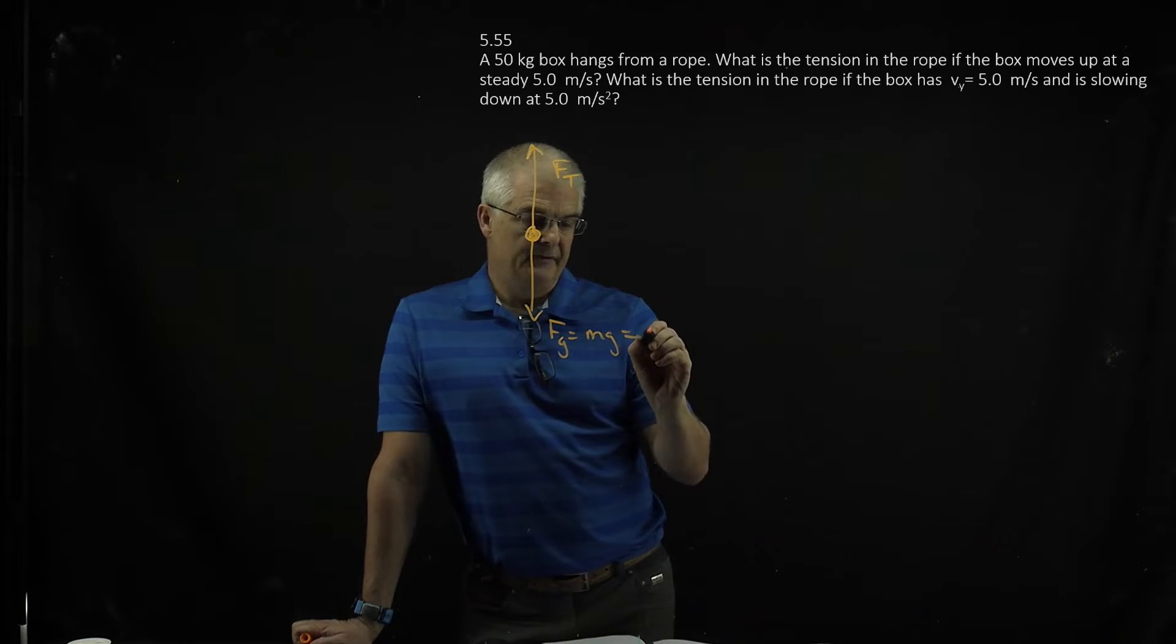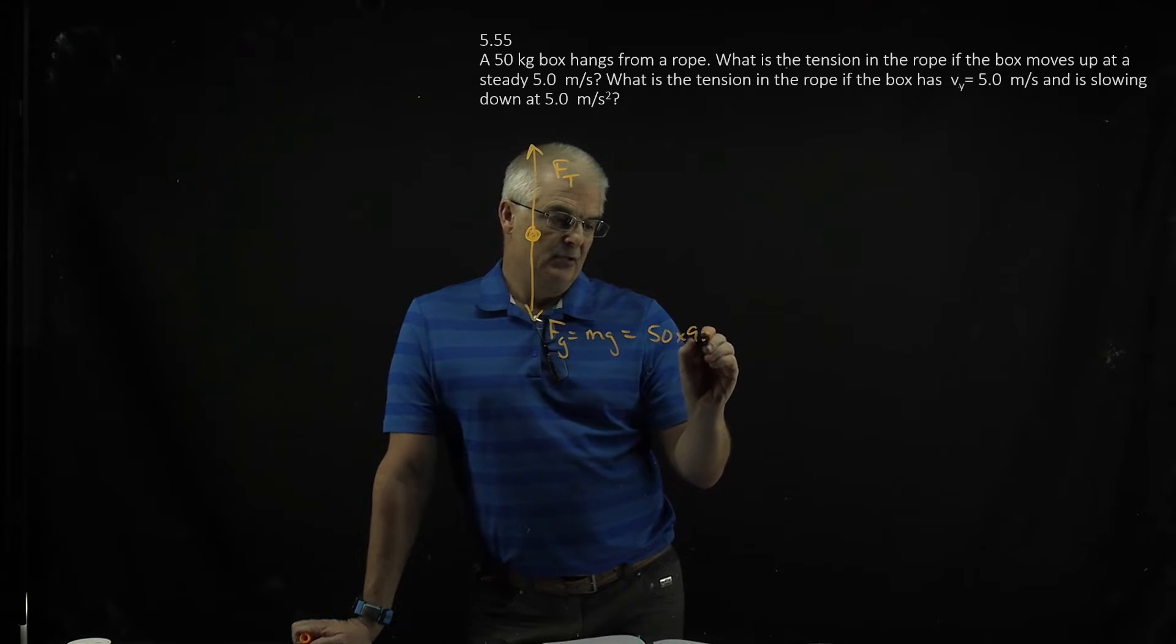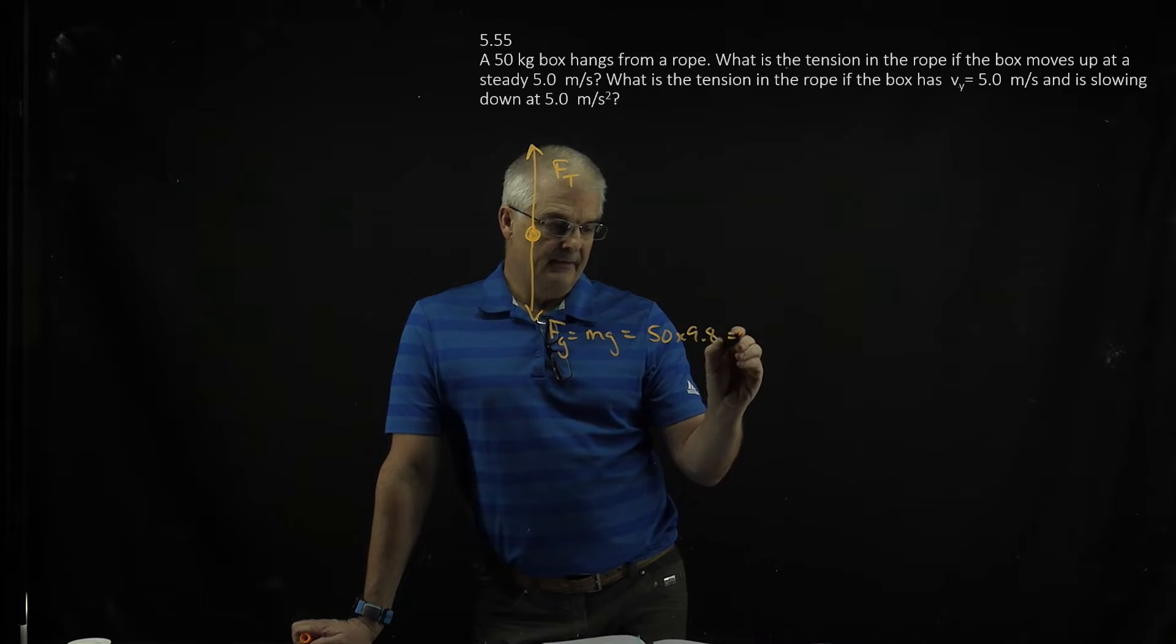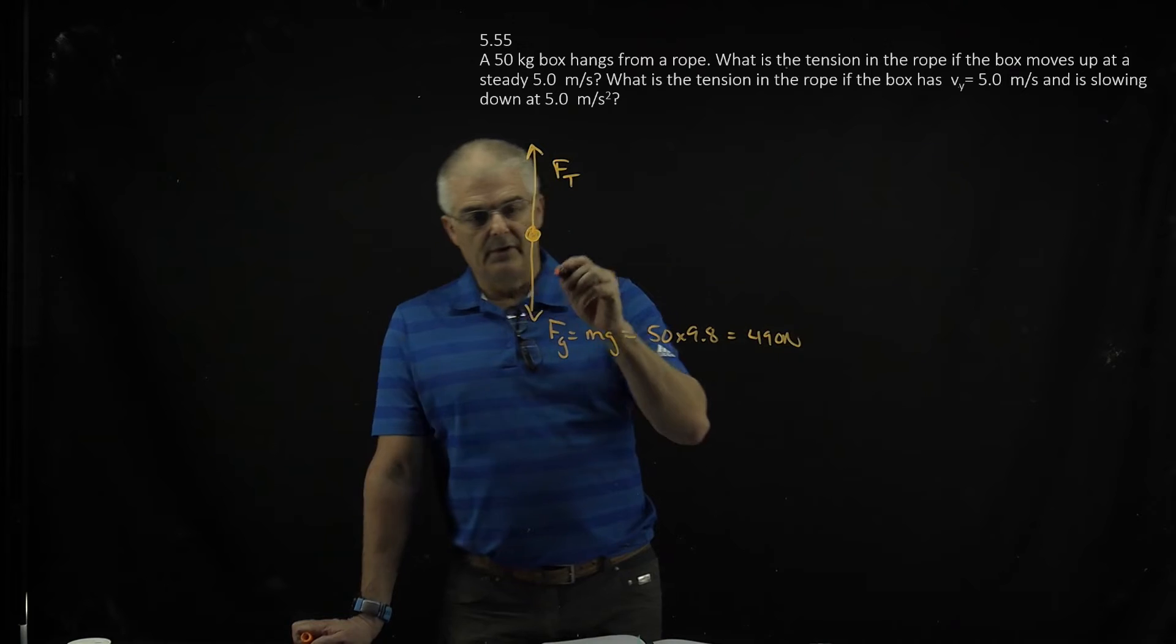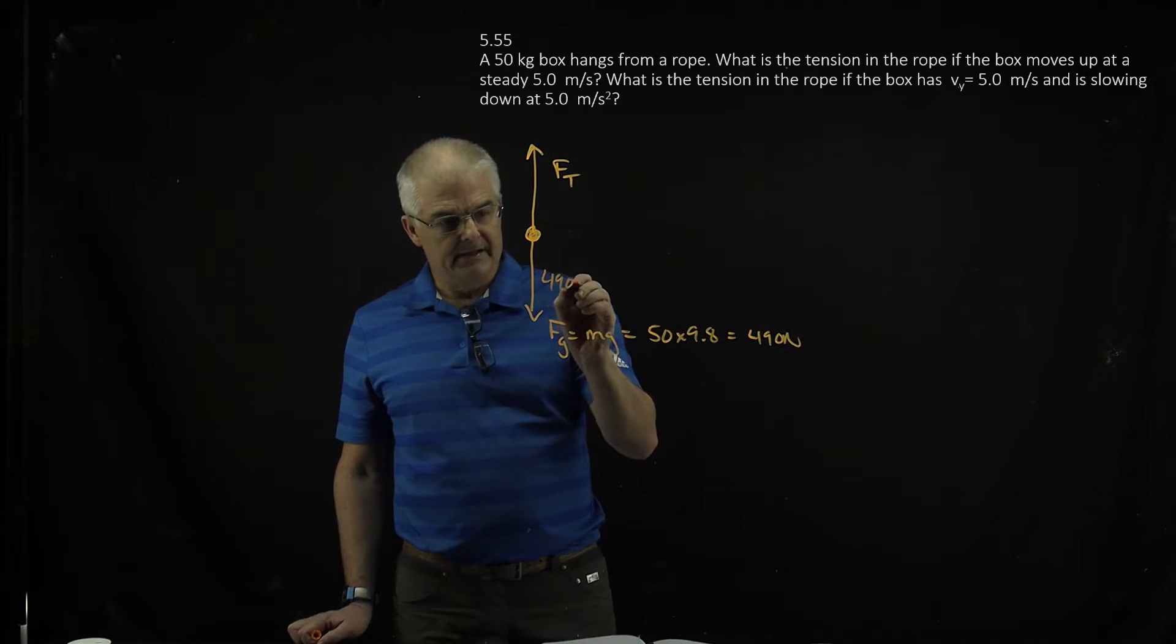Which will be m times g. So in this case, this will be 50 times 9.8, that's acceleration of gravity on the Earth, and that's 490 newtons. So we've got 490 newtons pushing down. Got it?